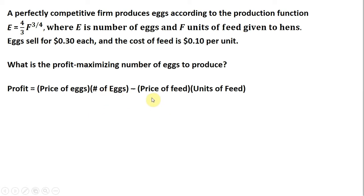E is the number of eggs, and we subtract total cost: the price of feed times units of feed. Making our substitutions, Profit = 0.30E - 0.10F, where 0.30 is the price of eggs, E is the number of eggs, 0.10 is the price of feed, and F is units of feed.